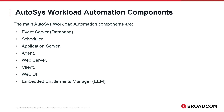The main Autosys Workload Automation components are: the event server or database, the scheduler, the application server, the agent, the web server, the client, the web UI, the embedded entitlements manager (EEM), and the common components (CCS). We will go through the details of each one in the upcoming slides.